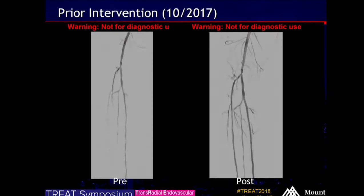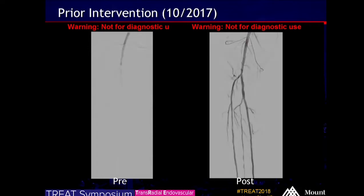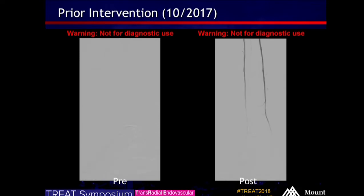This is showing imaging from the prior intervention. When he came in in October of last year, he had disease in the tibial peroneal trunk and distal popliteal, which we treated with angioplasty — and it looks much better on the post. Down below, you can see that the AT and the PT were looking pretty bad before and ultimately responded well to angioplasty.